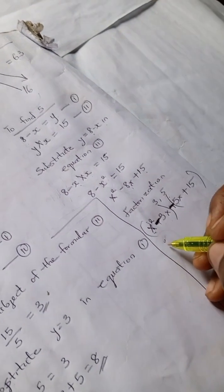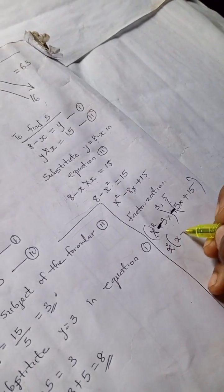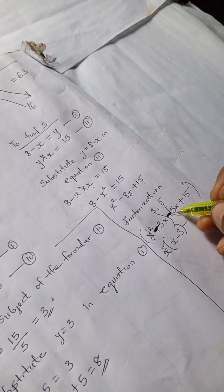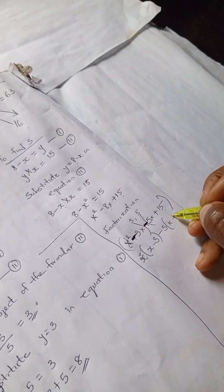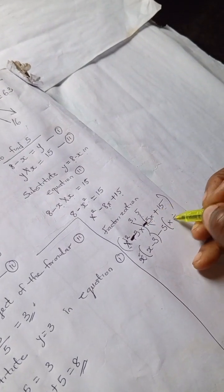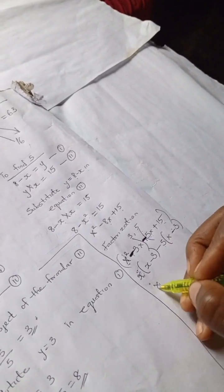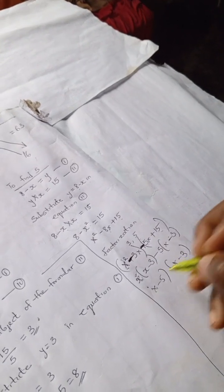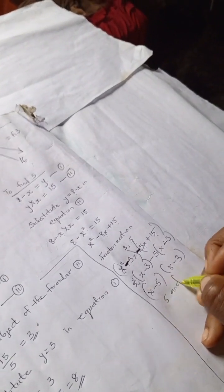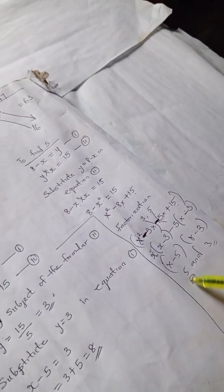Using factorization, we need two numbers that add to give minus 8 and multiply to give 15 — those are 3 and 5. So we factor as (x minus 3)(x minus 5) equals 0. This gives us x equals 5 or x equals 3. Using trial and error with the original pattern, we get 5. That's it for finding 5.